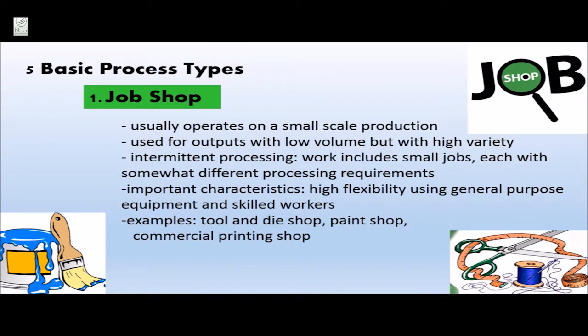There are five basic process types. The first type is the job shop, which usually operates on a small scale production. It is used for outputs with low volume but high variety. It has intermittent processing, meaning work includes small jobs each with somewhat different processing requirements. High flexibility using general purpose equipment and skilled workers are important characteristics. Examples include a tool and die shop, a paint shop, a commercial printing shop, and other manufacturers that make custom products in small volume.